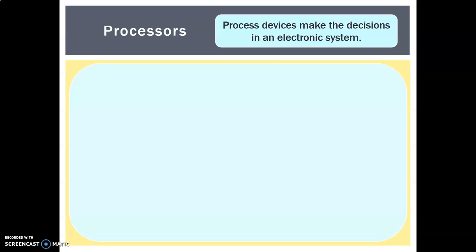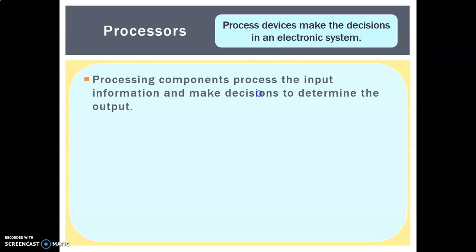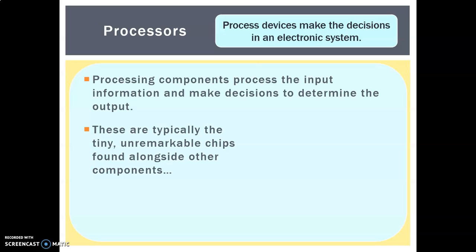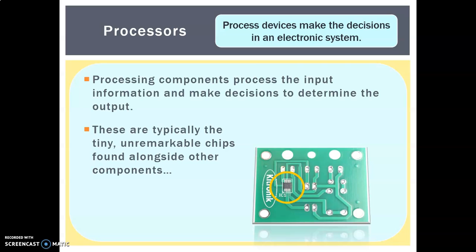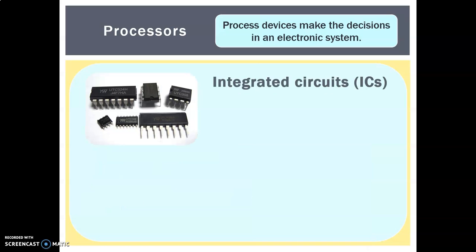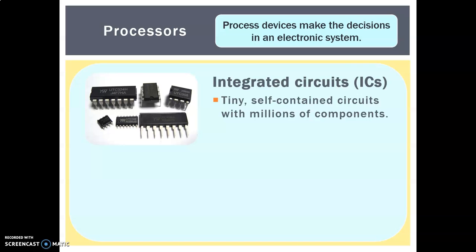Now let's look at process devices, which make the decisions in an electronic system. Processing components process the input information and make decisions to determine the output. These are typically tiny, unremarkable chips found alongside other components — just like the one on our speaker board — but they are incredibly complex. The first type is an integrated circuit, or IC. These are tiny, self-contained circuits that have millions of components inside — a circuit within a circuit.